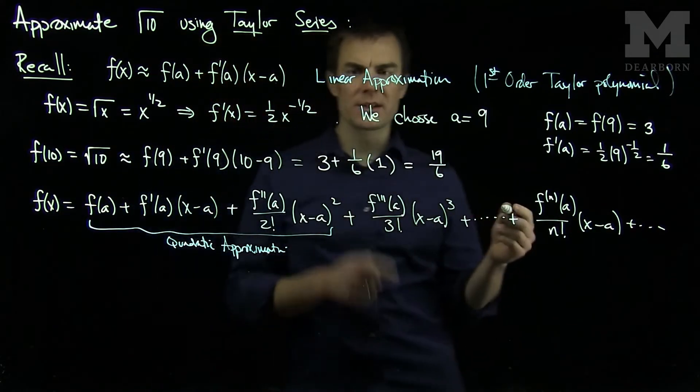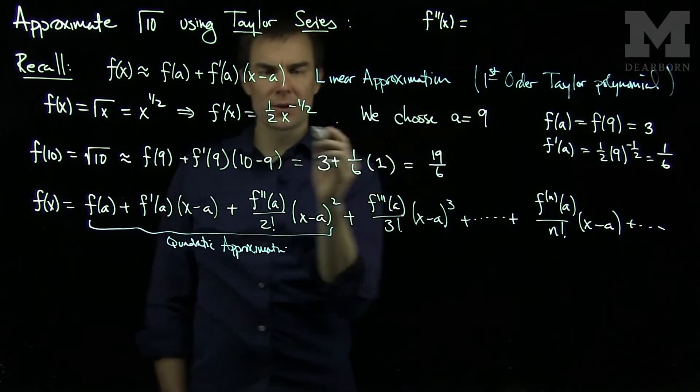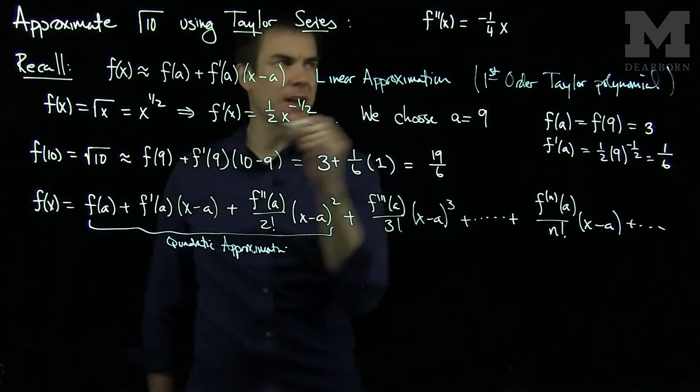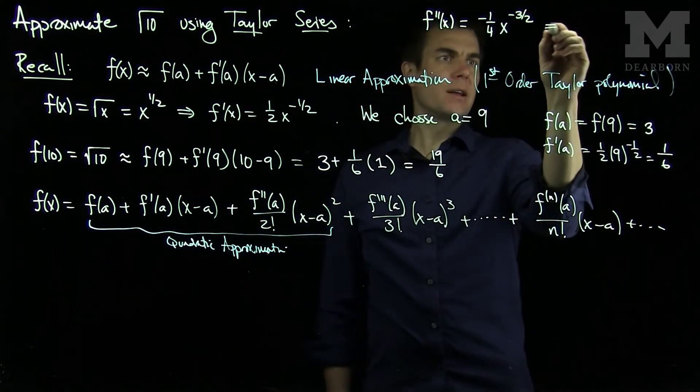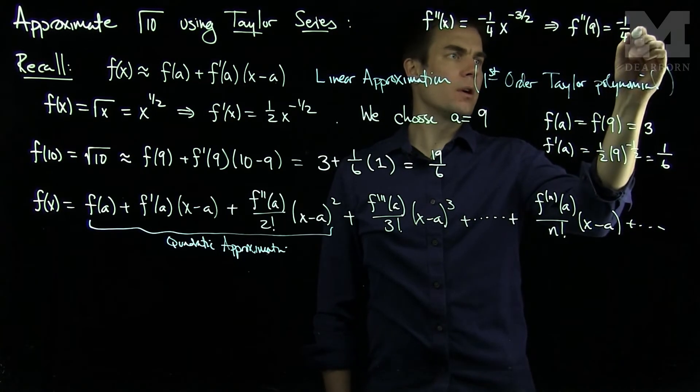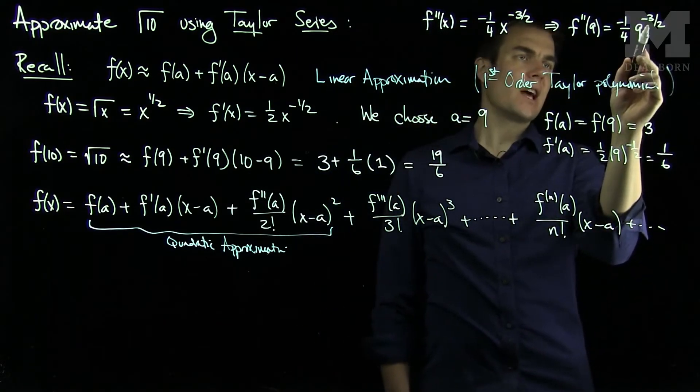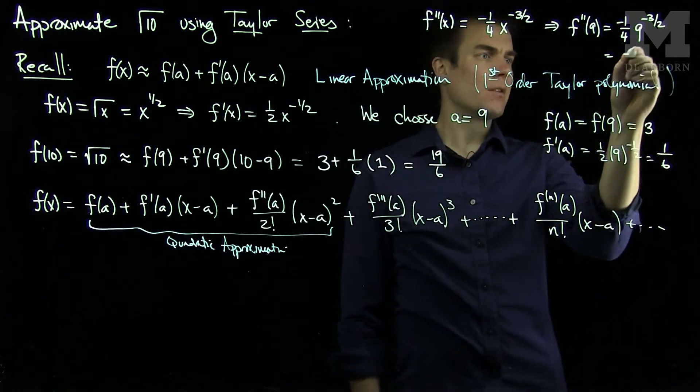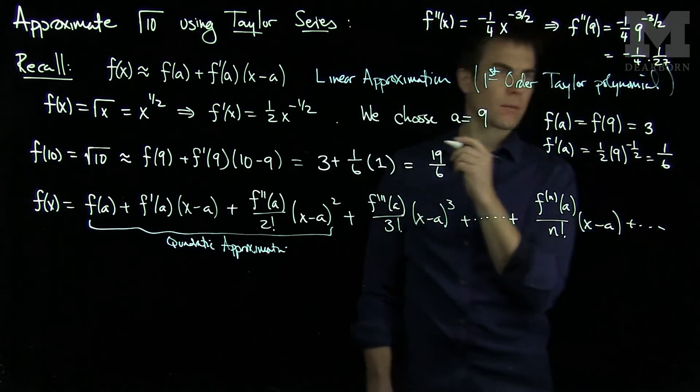So let's compute the second derivative. So the second derivative, f''(x), we'll have 1/2 times negative 1/2. That's negative 1/4. And then we'll have x to the negative 3/2. And so if we plug in 9 to this, we'll have f''(9). It'll be negative 1/4. And then 9 to the negative 3/2. And of course, 9 to the 1/2 is 3, and 3 to the third power is 27. So I have 1/27. So this is going to be negative 1/4 times 1/27.